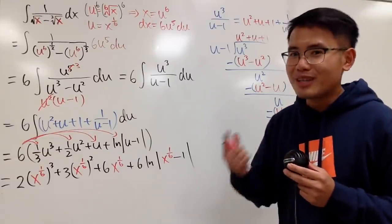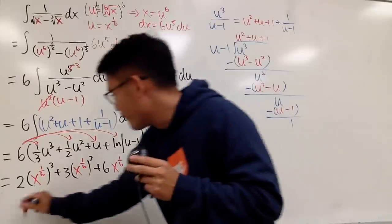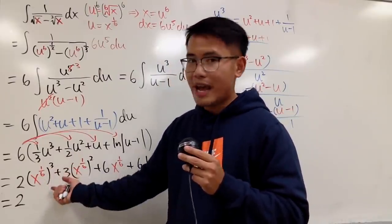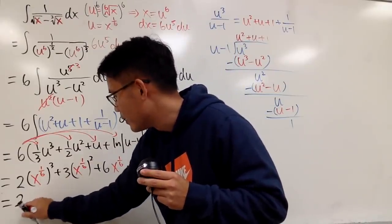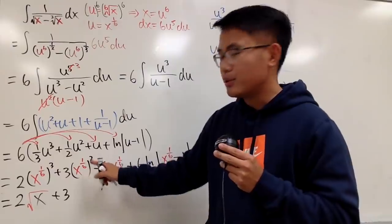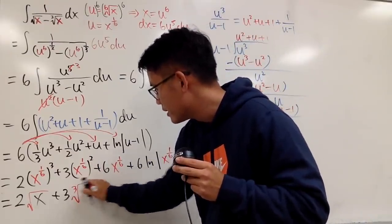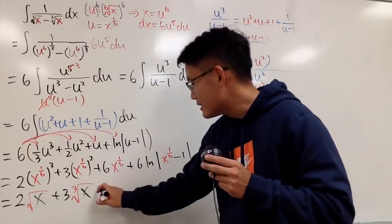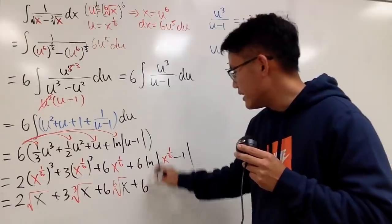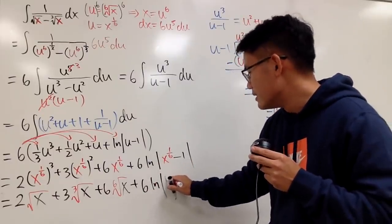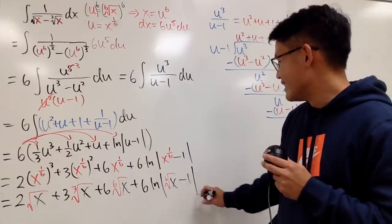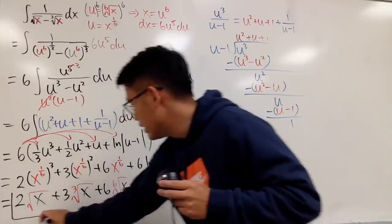Let's write this back in radical notation. We have 2 times the square root of x, plus 3 times the cube root of x, plus 6 times the 6th root of x, plus 6 ln of the absolute value of (the 6th root of x minus 1), plus C. And we box the answer.